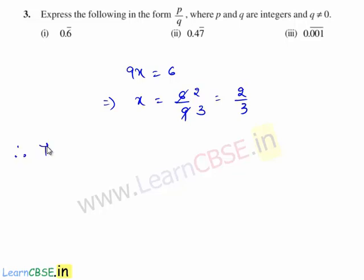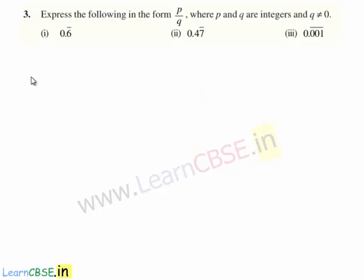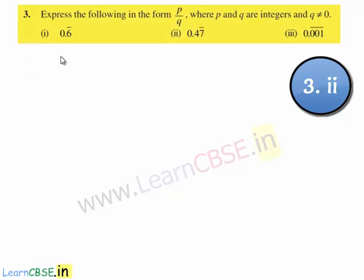Therefore the p by q form of the given decimal expansion 0.6 bar is 2 upon 3, where 2 and 3 are integers and the denominator is not equal to 0. Now let us move on to the second bit of the question.